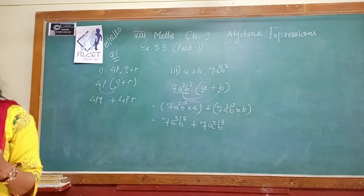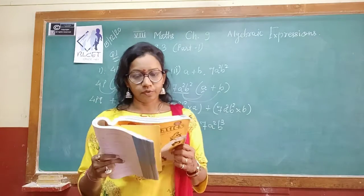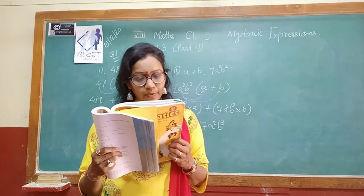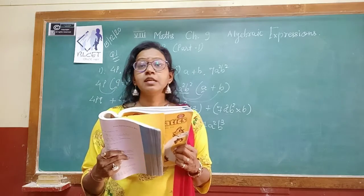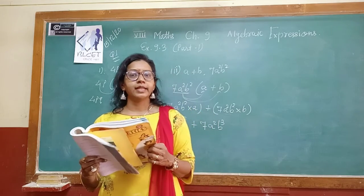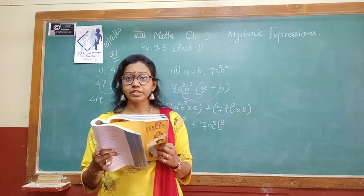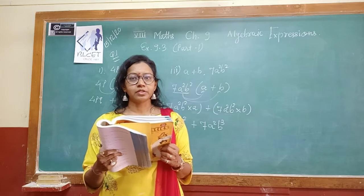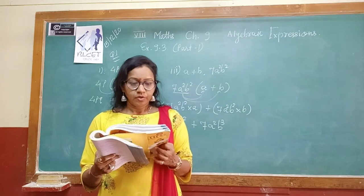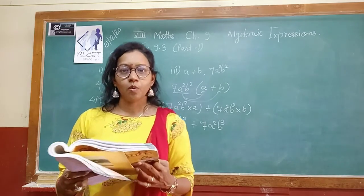Next you have (a² − 9) multiplied by 4a — try to do that by yourself. And the next one is (p³ + qr + rp) multiplied by 0. As you all know, any term multiplied by 0 gives the answer 0. So this is all about question number 1.